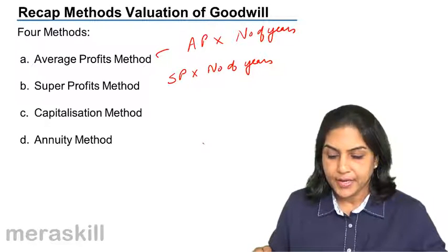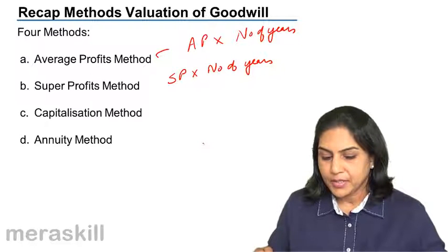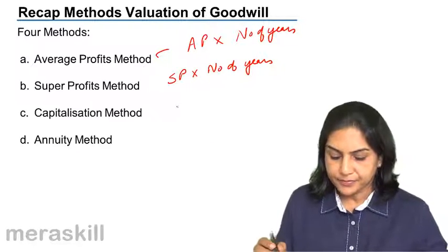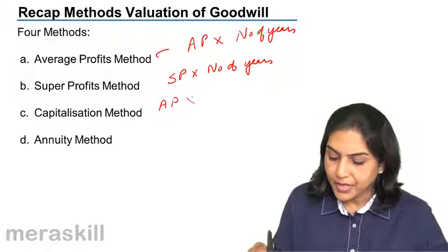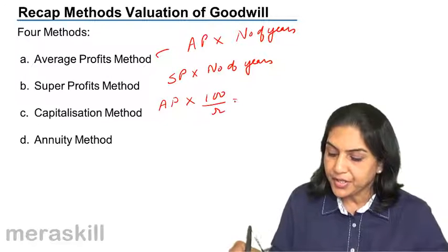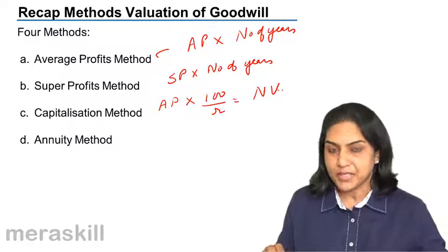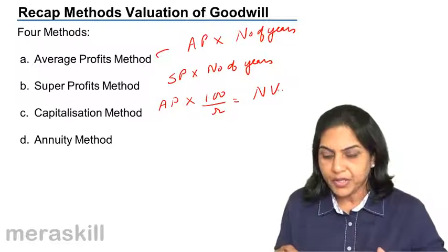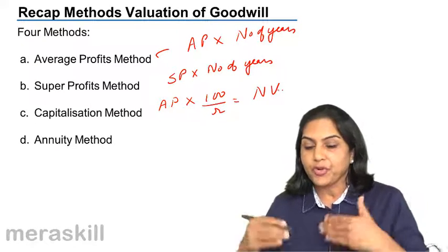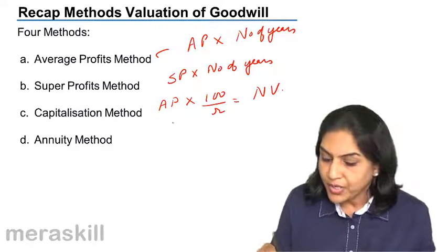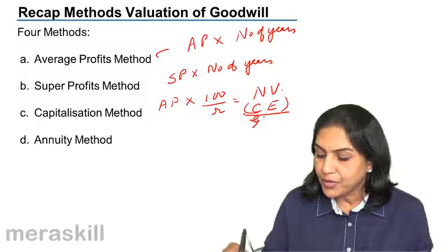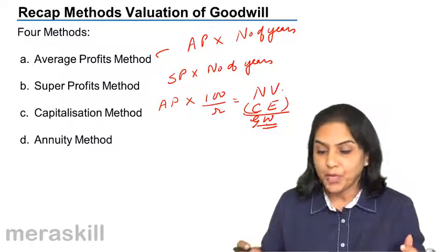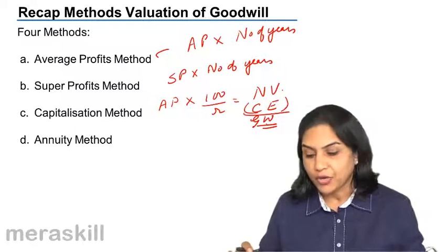Capitalization method. Under the capitalization method, we take the actual profit multiplied by 100 divided by the rate of return to arrive at the normal value of the business. So, this is the actual profit and this is the normal rate of return — therefore, your value of business should be so much. But what is the actual capital employed? Normal value minus capital employed gives us goodwill. The amount of capital employed could be lower, and the difference is said to be on account of goodwill.